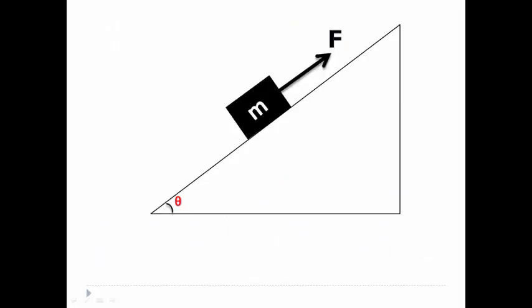Now we will go to more tricky examples. Here block of mass M is being pulled by force F along the slope having an inclination of angle theta. Here we assume that the given surface is frictionless.